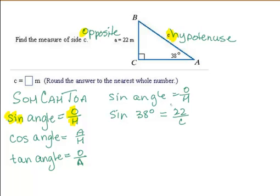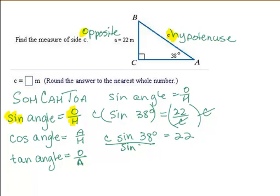Now we've got C in our denominator and we want to get rid of that. So let's multiply both sides times C. So the C's cancel on the right side and we've got C sine 38 degrees equals 22. We still want to get C by itself. So let's divide both sides by the sine of 38 degrees. And so now that cancels and we have C is 22 divided by the sine of 38 degrees.